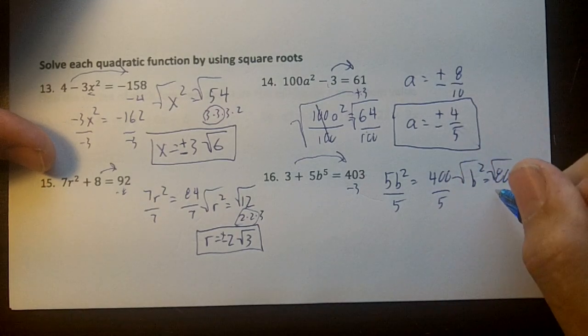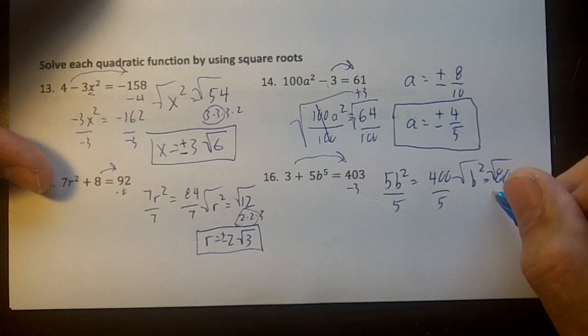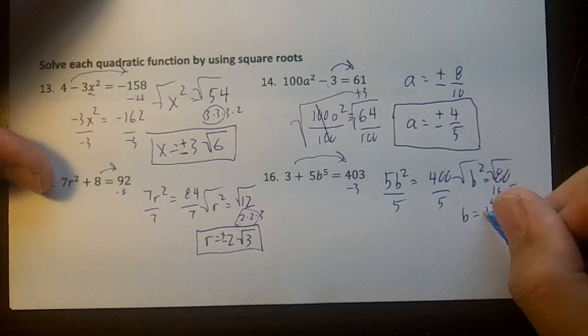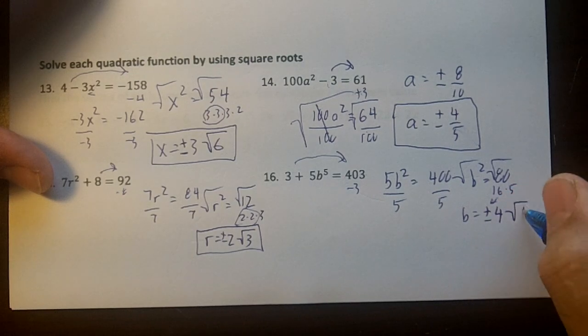Then I'm going to square root. This is going to be, wow, that's a lot of 2s. I'm just going to put 16 times 5, and the square root of 16 is 4, so it's going to be plus or minus 4 square root of 5.